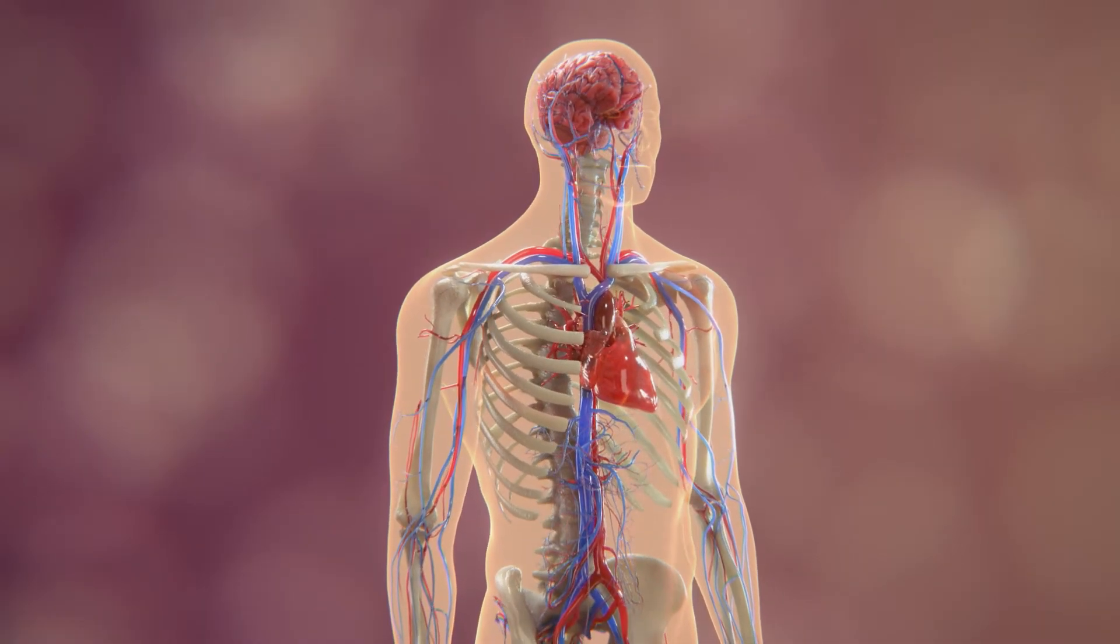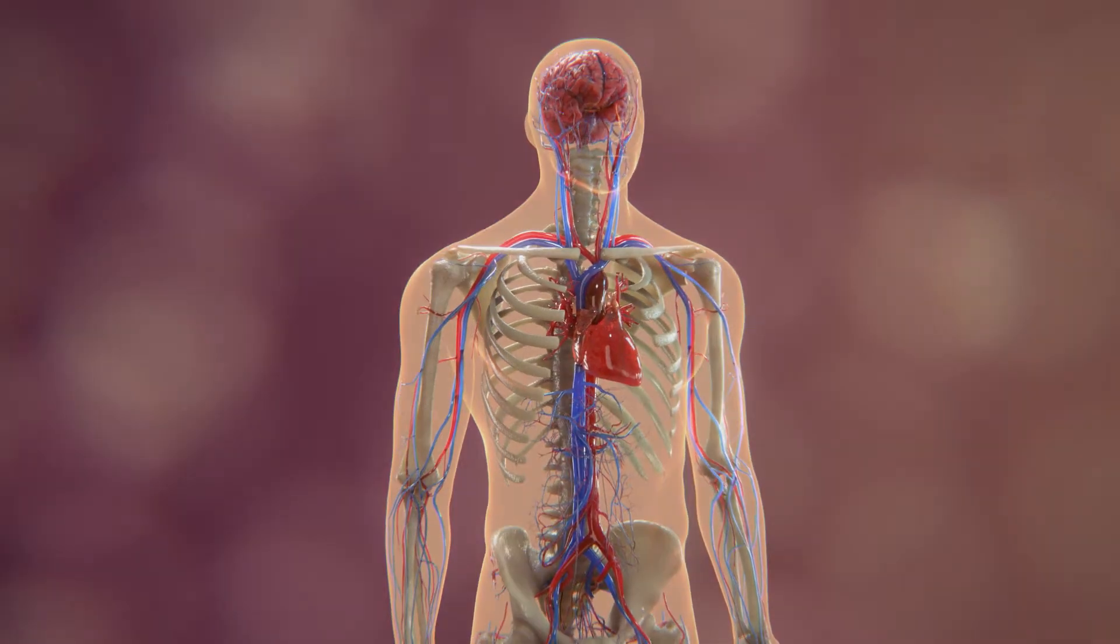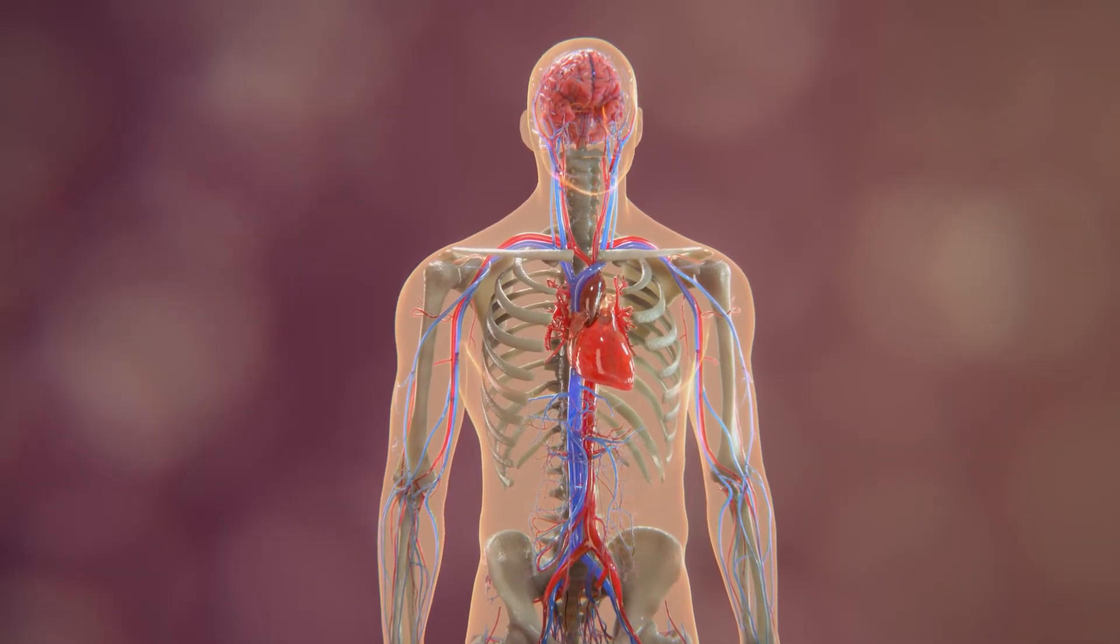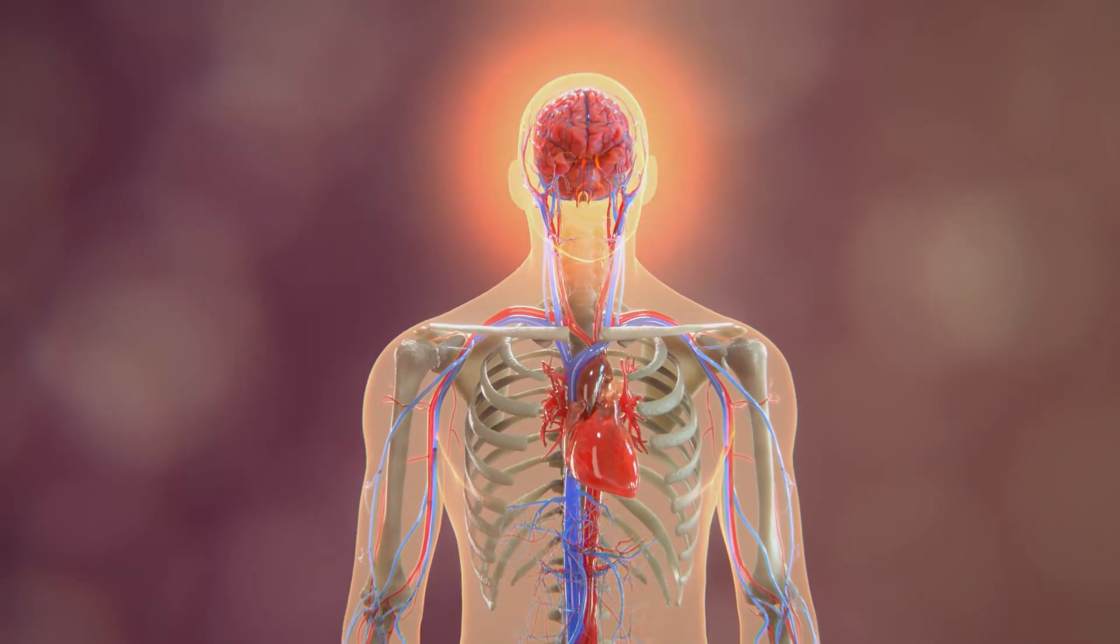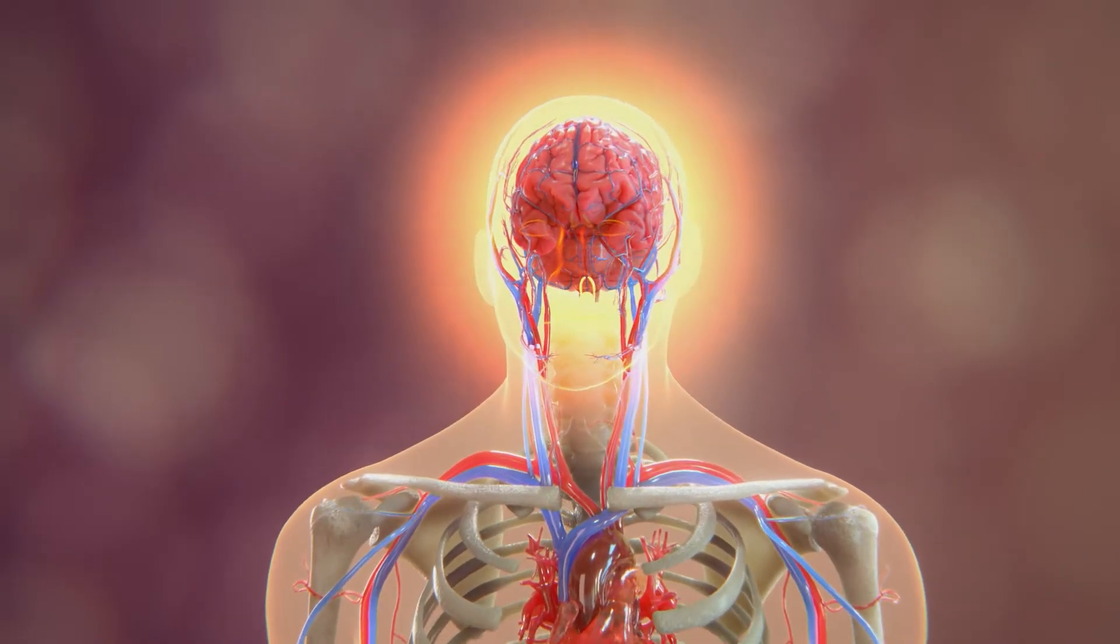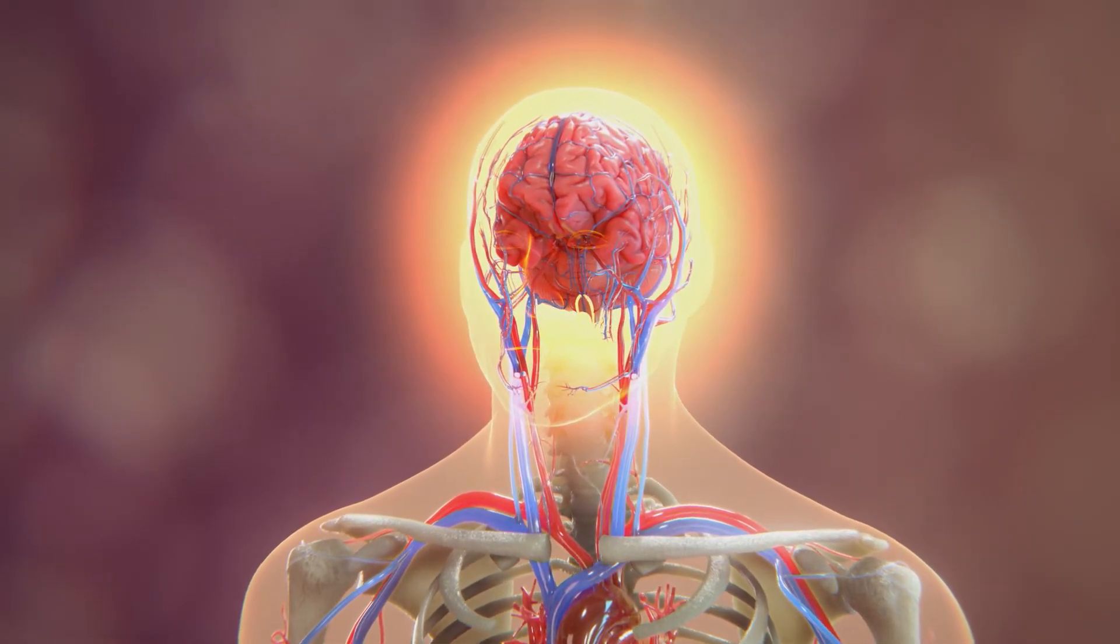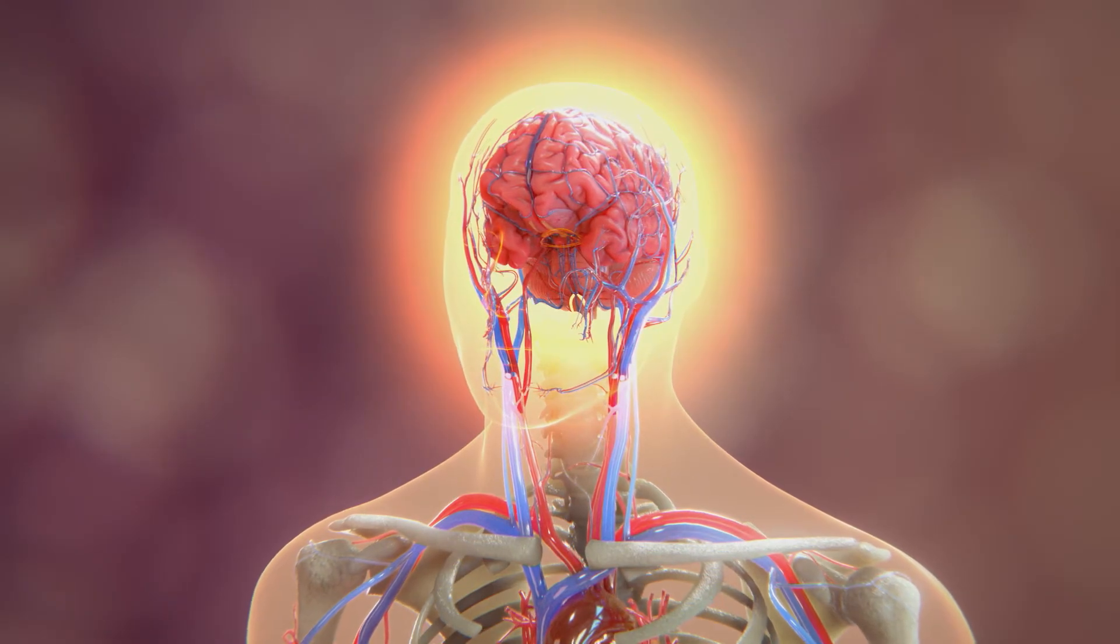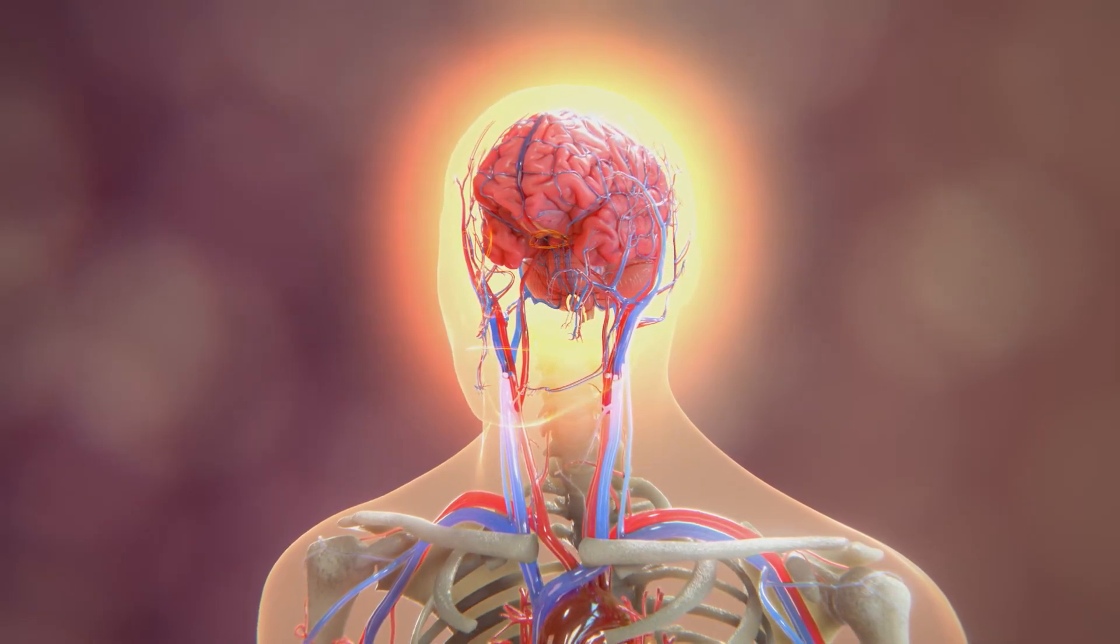ABL-Bio BBB bispecific antibodies are mostly delivered to the brain and central nervous system, because the target receptor is not as abundant anywhere else around the body, making them highly adapted to target brain-related diseases such as PD.